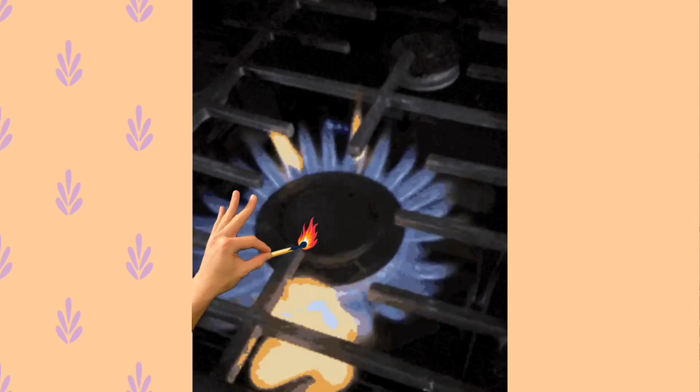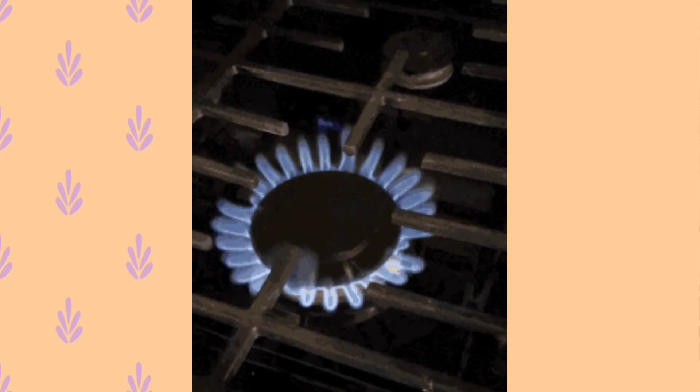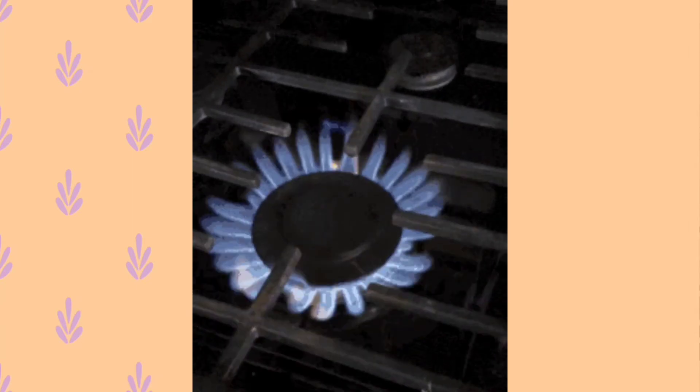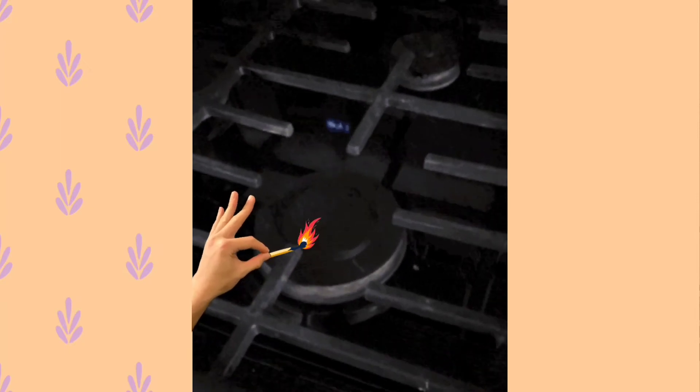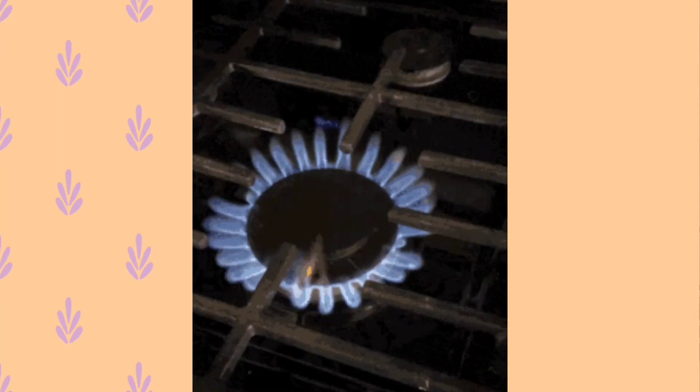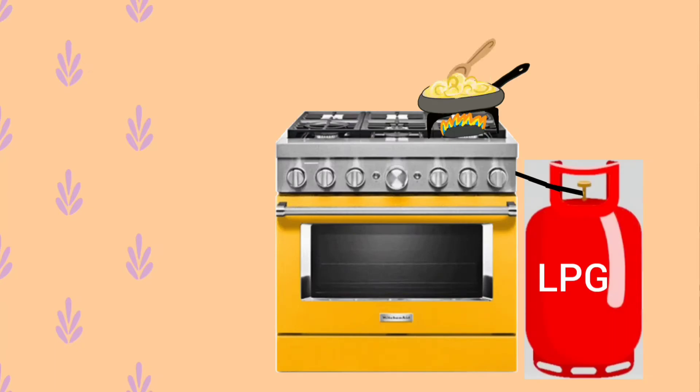You might have noticed that when we bring a lighted matchstick or a lighter near the burner of a gas stove in the kitchen, the cooking gas starts burning at once, producing a lot of heat and some light also. So the immediate burning of the cooking gas, that is LPG, in a gas stove to give heat and light is an example of rapid combustion.